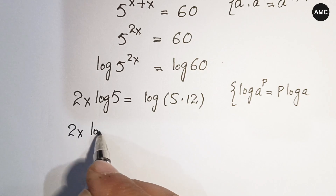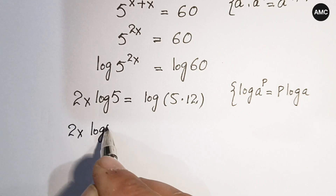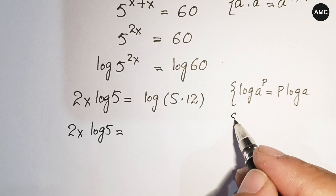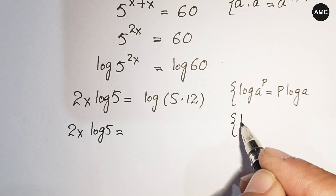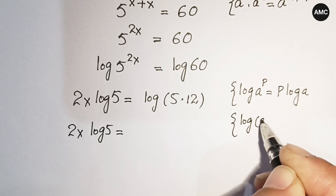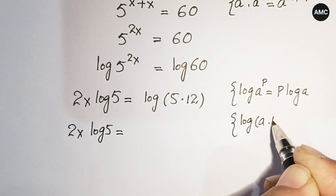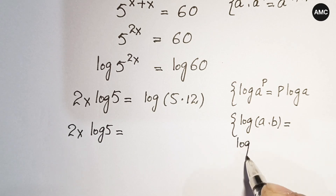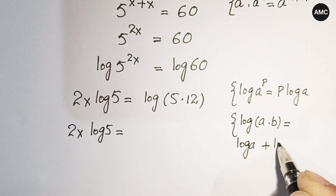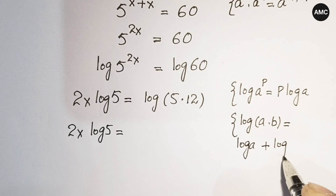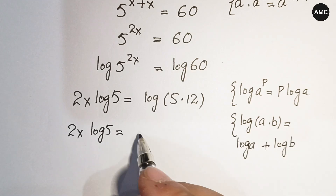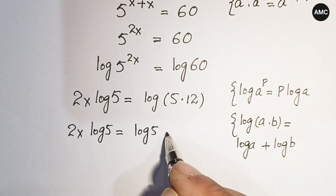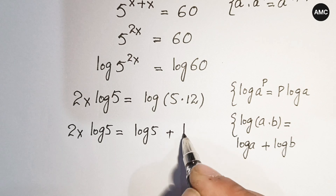Log 60 can also be written as log of 5 times 12. Using the logarithm law — log a times b equals log a plus log b — we expand this as log 5 plus log 12. So we have 2x log 5 equals log 5 plus log 12.